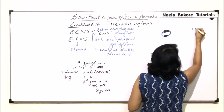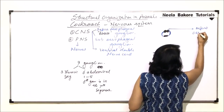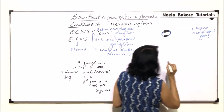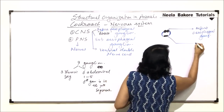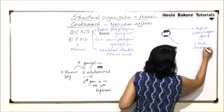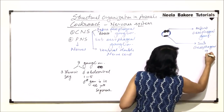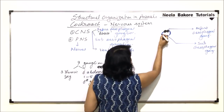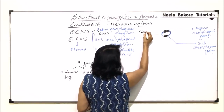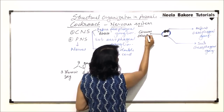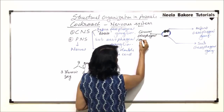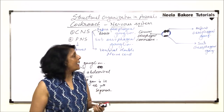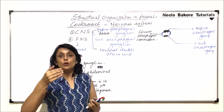On top is the supraesophageal ganglion, below is the subesophageal ganglion, and the connecting strands are known as the circumesophageal commissure. So it is just a connection between the supra and the subesophageal ganglia.